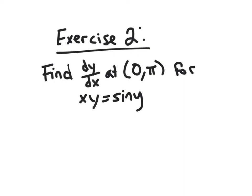So your second exercise for the class prep is to find the derivative at the point 0 pi for xy equals sine y. And remember, so you're going to get dy/dx on each side. So remember that you want to end up grouping those guys together and factor that dy/dx out. Thanks for watching.